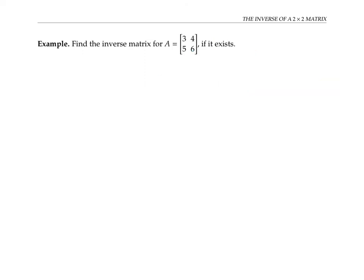So let's go back to our original problem, finding the inverse for this two by two matrix. We know the inverse should be what we get when we switch the numbers on this diagonal and negate the numbers on this diagonal and multiply the whole thing by one over three times six minus four times five.